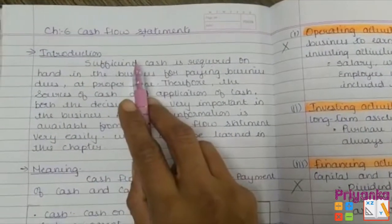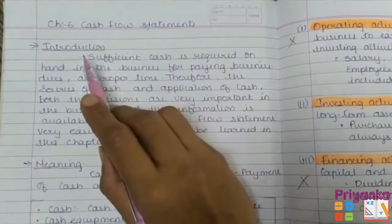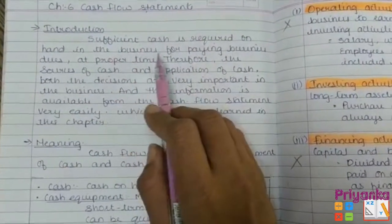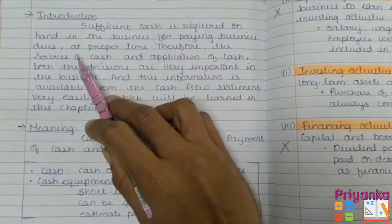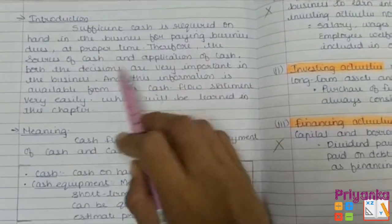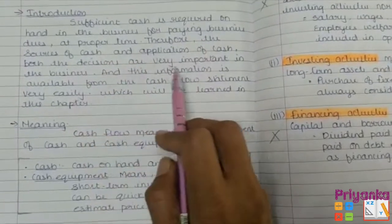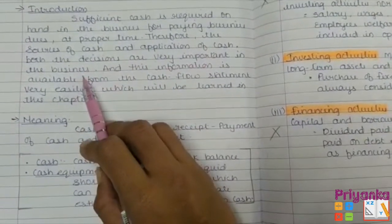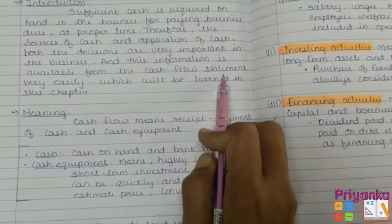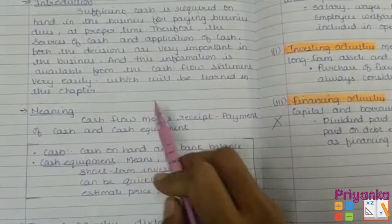Here comes the last chapter of the portion: the cash flow statement. Introduction — sufficient cash is required on hand in the business for paying business dues at the proper time. Therefore, the source of cash and application of cash are both very important decisions in business. This information is available from the cash flow statement very easily, which will be learned in this chapter.